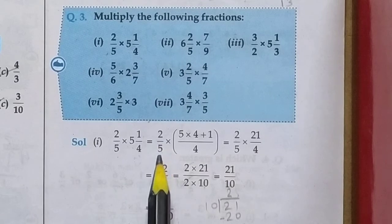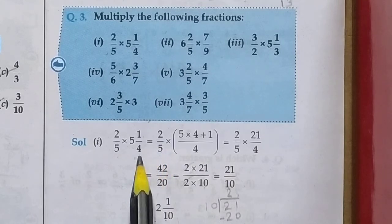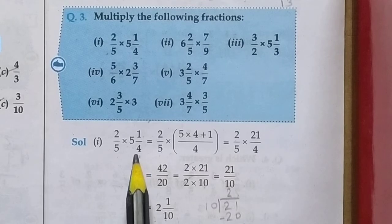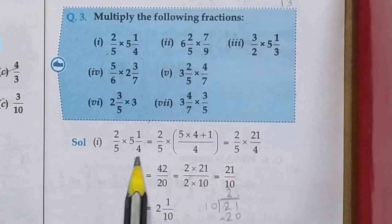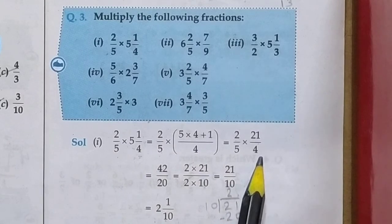2 upon 5 as it is. Students, it is a mixed fraction, so first of all convert it to an improper fraction. 4 times 5 is 20, 20 plus 1 equals 21. So 21 upon 4. Now 2 times 2 is 4.